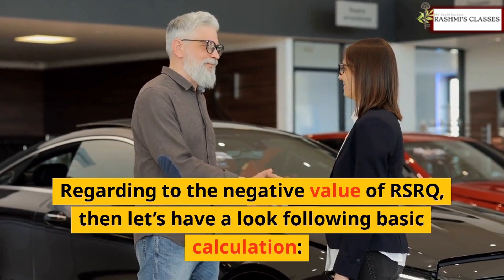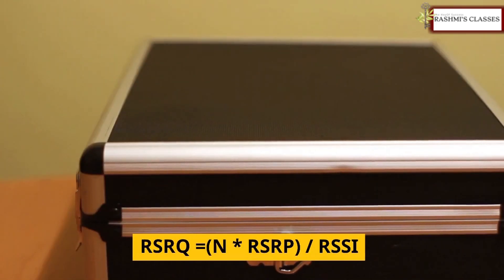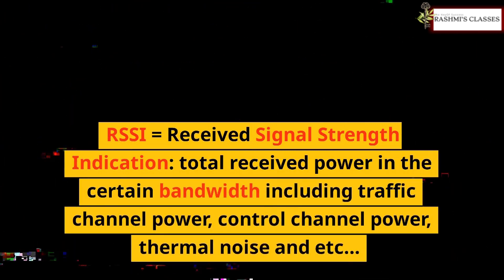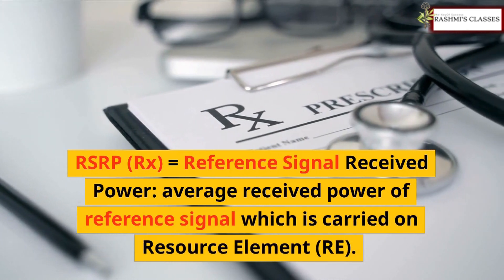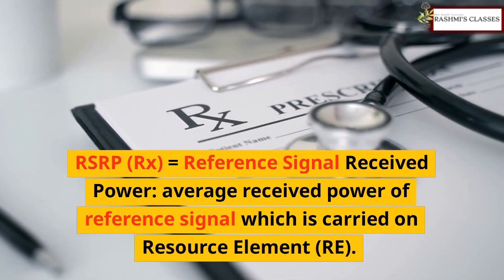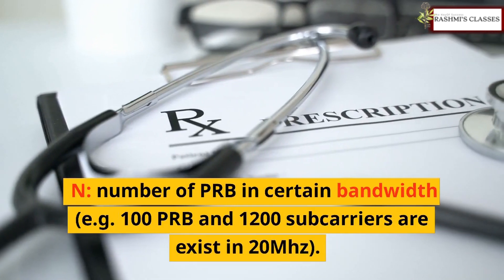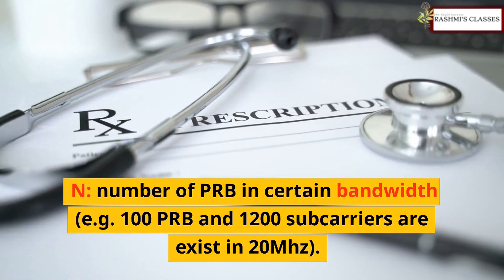Regarding the negative value of RSRQ, let's look at the following basic calculation. RSRQ equals N × RSRP / RSSI, where RSSI is the total received power in a certain bandwidth including traffic channel power, control channel power, thermal noise, and so on. RSRP is the average received power of the reference signal carried on a resource element. N is the number of PRBs in a certain bandwidth — for example, 100 PRBs exist in 1200 subcarriers in 20 MHz.